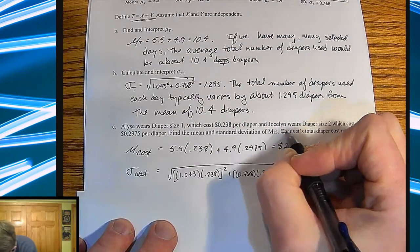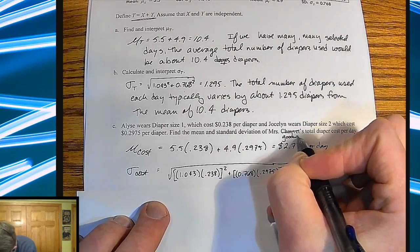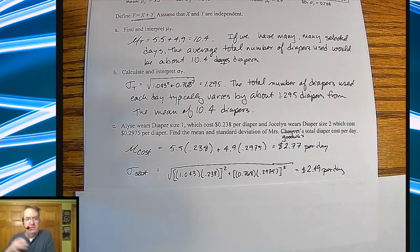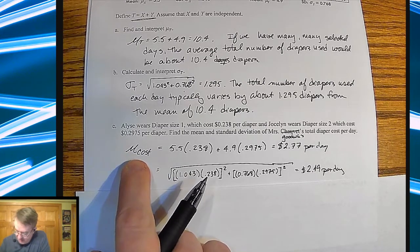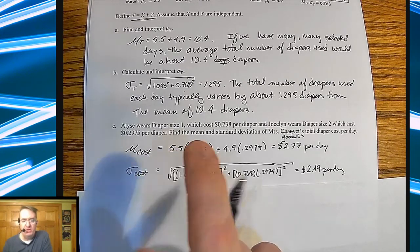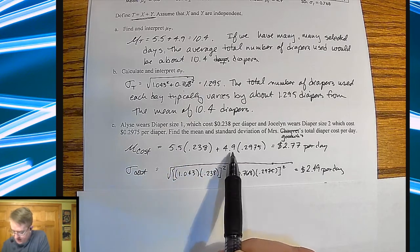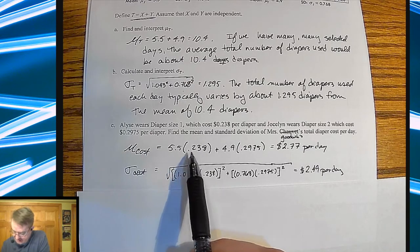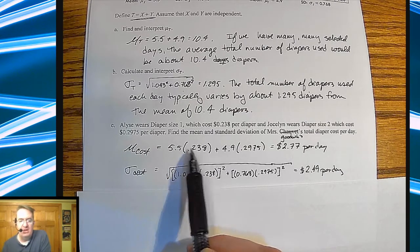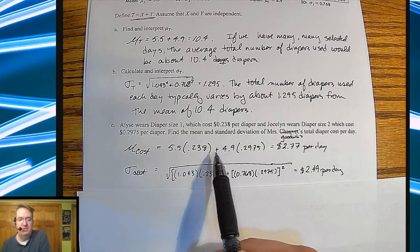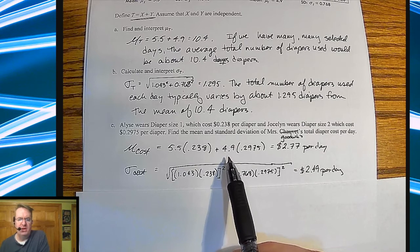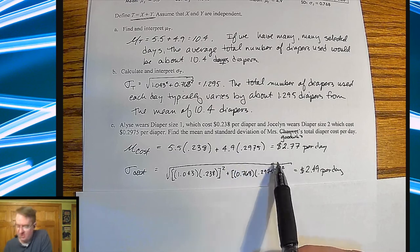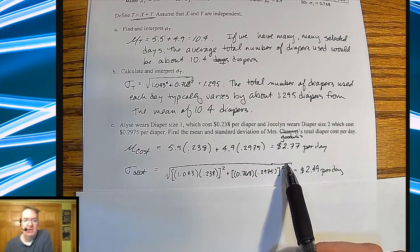And then last but not least, they're asking about how much cost are they going to end up having here? Oh, it should be Mrs. Goodwin's. I forgot to change that. Sorry. So yeah, I modify these. These are not exactly, I put them for my kids. You got it. So the average cost is, so you're going to go ahead just like you would do whatever the average, you normally would multiply the averages together, but you're going to scale it by whatever the price is. So since X has an average price of 2.38, we're going to go five and a half times 0.238 cents, or $2.38, 0.238. And then we're going to take 4.9 diapers times the average price of 0.2975 dollars. So that gives them an average cost of $2.77 per day.